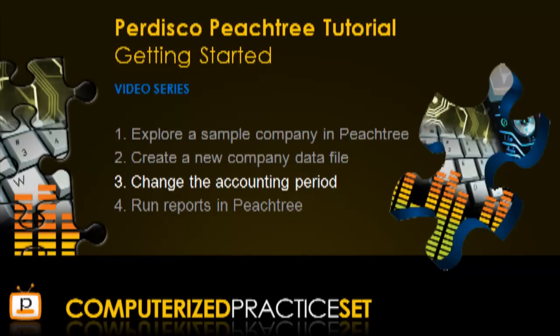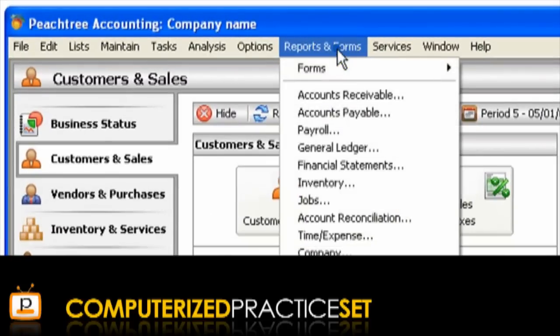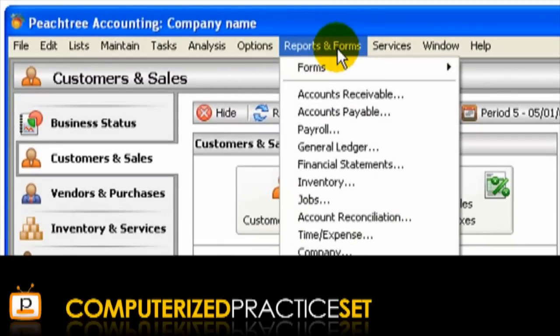Now you have learned how to change the accounting period. To finish this tutorial, let's spend a little time learning how to run reports in Peachtree. Peachtree has many pre-programmed reports that users can run at the click of a button or two. To access these, from the menu bar, click Reports and Forms, where you will get a list of reporting categories to choose from.